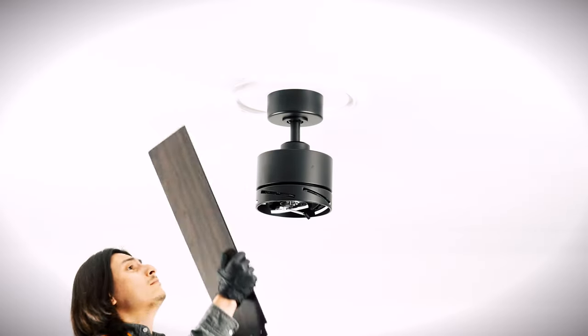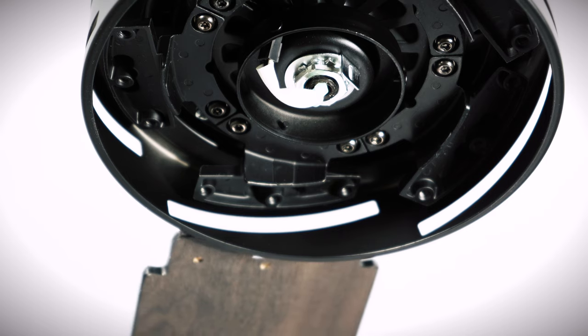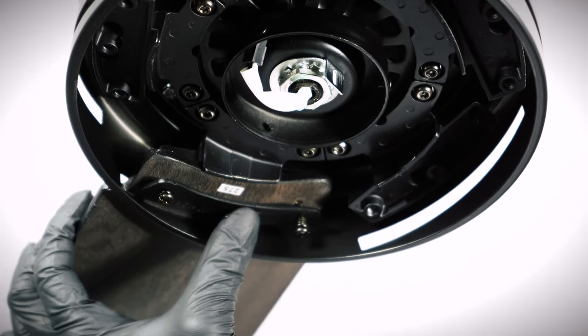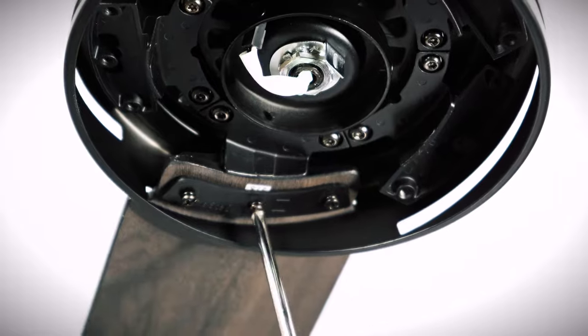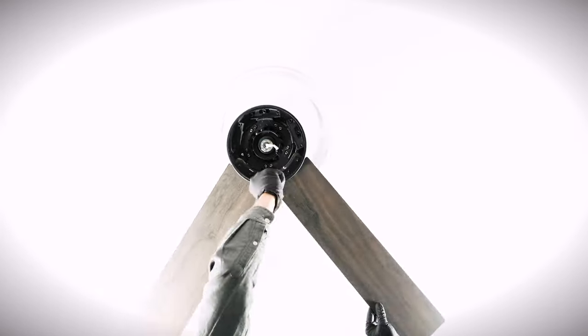Bring a fan blade up to the motor. Pick a side of the reversible blade to face downward and insert it into one of the slots on the motor. Align the blade support plate with screws over the holes and tighten all screws securely. Repeat the process for the remaining blades.